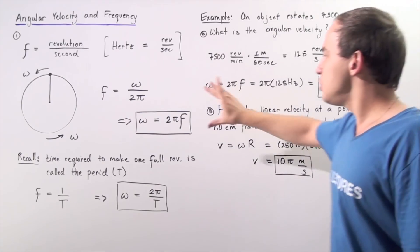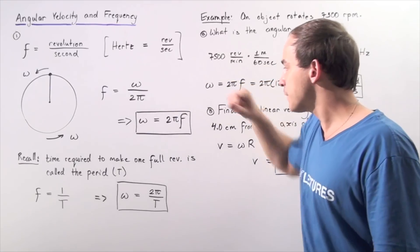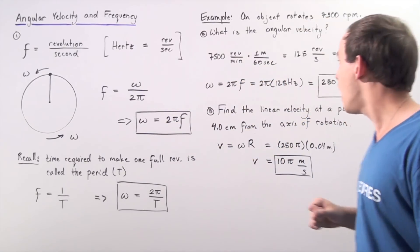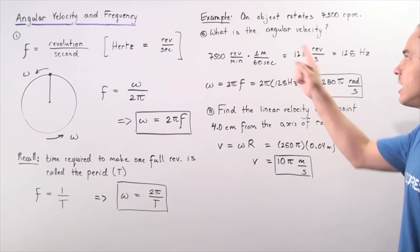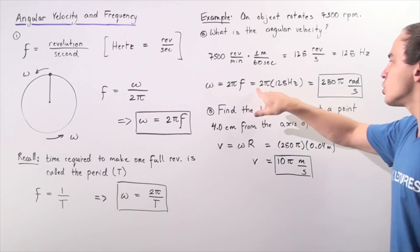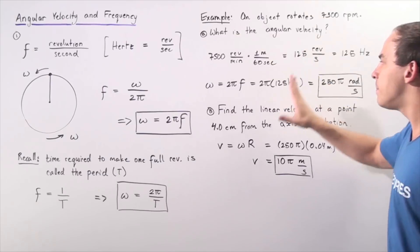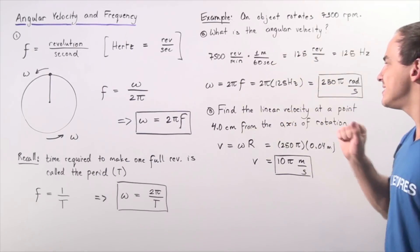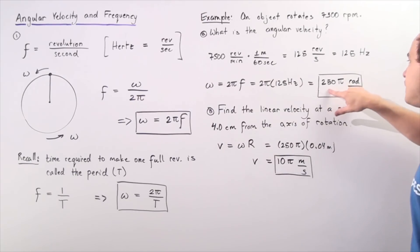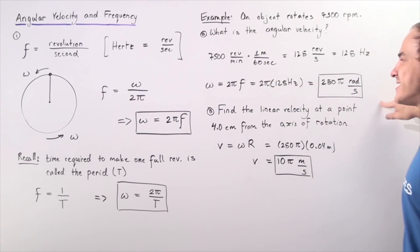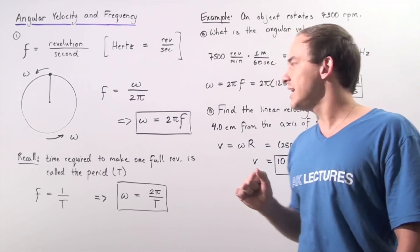Now we can use the equation omega equals two pi times frequency, simply plugging in 125 hertz. We leave pi as it is and multiply 2 times 125, giving us an angular velocity of 250 pi radians per second for the rotating object.